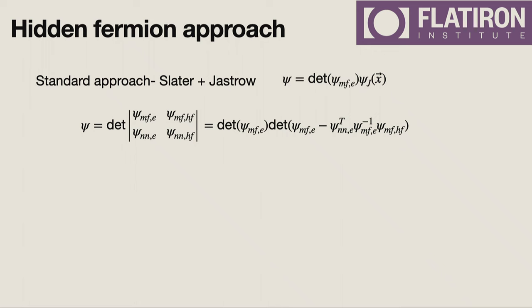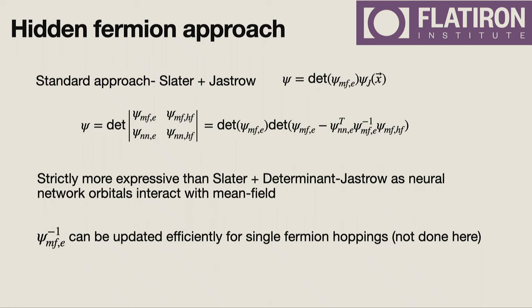If you expand out the determinant as a product of determinants, you can see the first term is the Slater part of the ansatz, and the second term is the Jastrow factor. This Jastrow factor is informed by the mean-field configurations, giving you this interaction between your neural network orbitals and your mean-field orbitals, which produces really rich expressive power. What's great about this method is the mean-field part can be computed very efficiently for single fermion hoppings via low-rank updates to the determinant, making it probably more efficient than backflow in some ways.